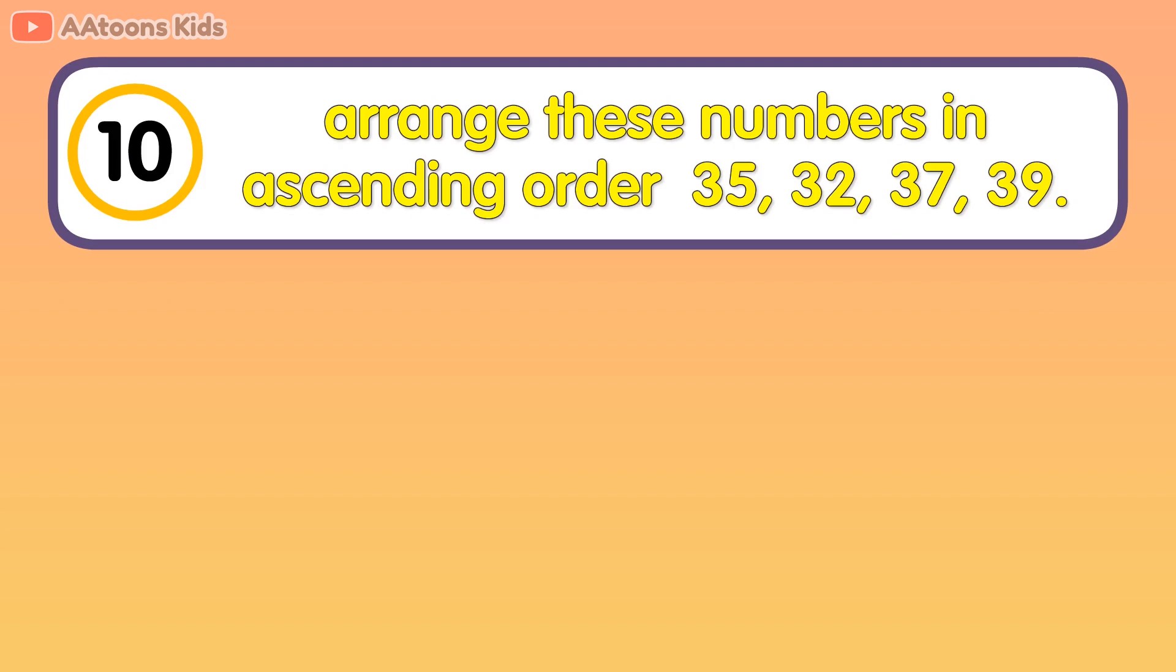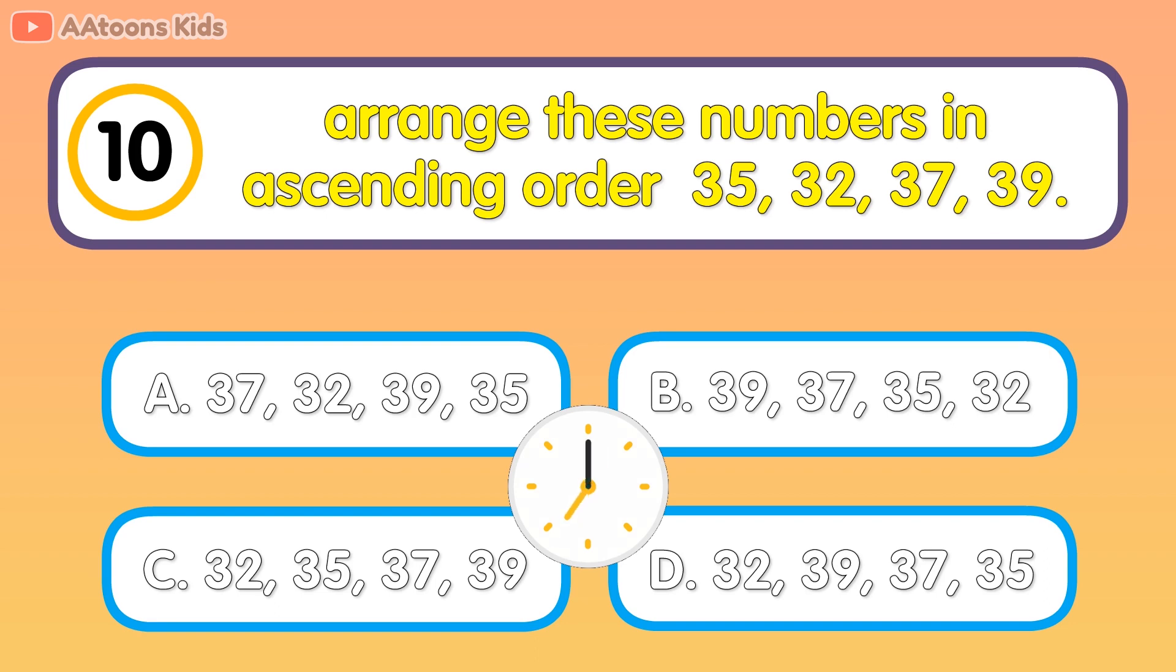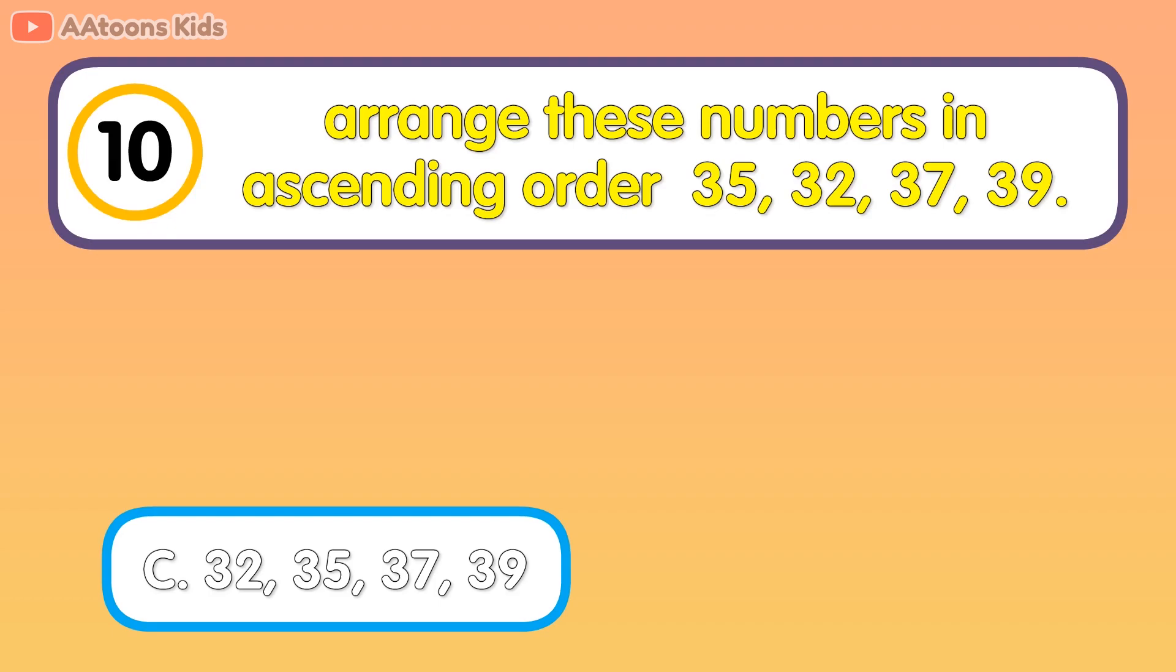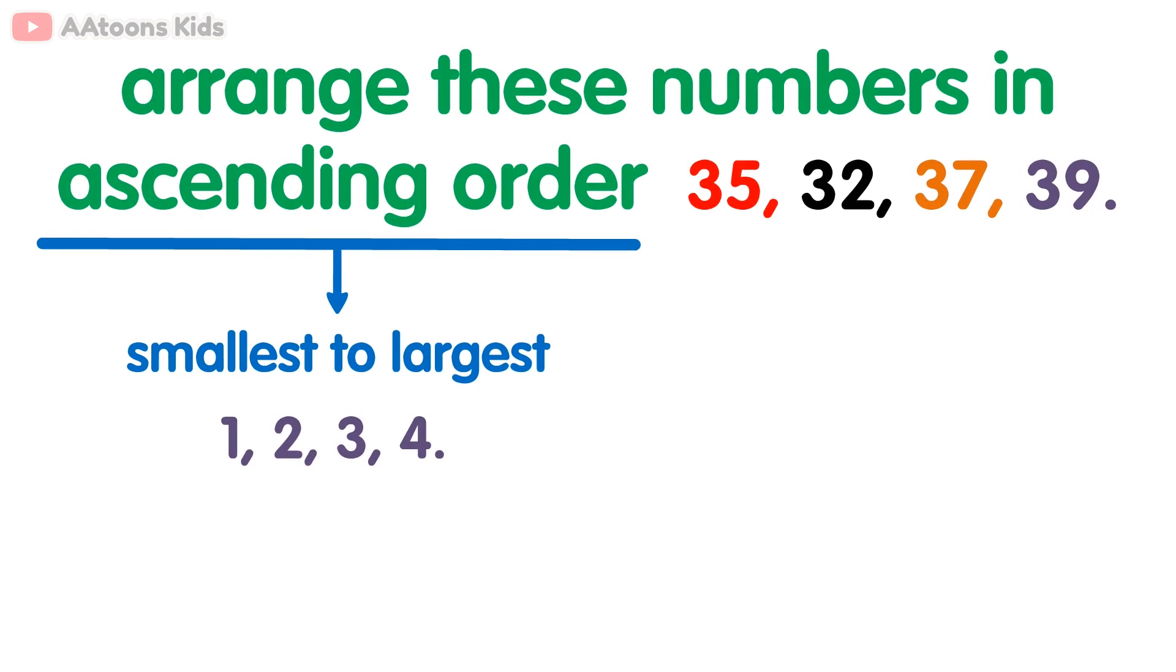Arrange these numbers in ascending order. Option C. Ascending order means arranging numbers from smallest to the largest, like 1, 2, 3, 4, 5 and so on. 32, 35, 37, 39. Option C is the correct answer.